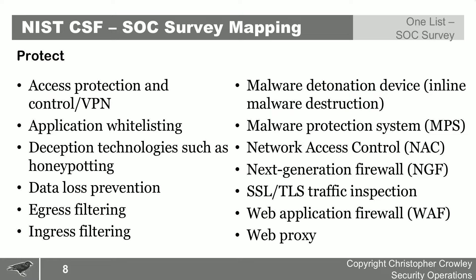In the Protect category — and there's a lot of stuff here — these are technologies overlaid onto IT infrastructure to make things operate safely. They include filtering on network traffic moving in and out of the environment, inline detonation, access control for networks, firewalls of various generations, and web application firewalls for inline content inspection.